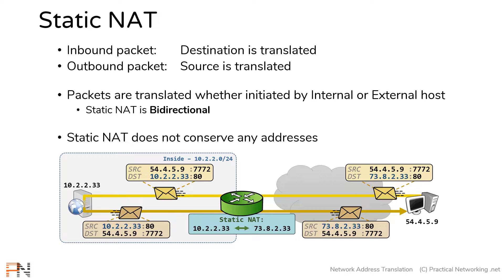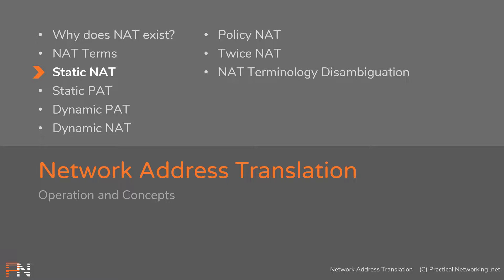So those are the three items we wanted to highlight about static NAT. The key takeaway from this lesson is that a static NAT is an explicit mapping between one IP address to another IP address. I hope you enjoyed this video — thank you for watching and we'll see you in the next one.